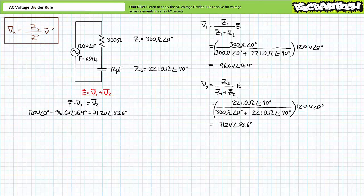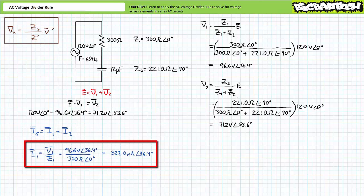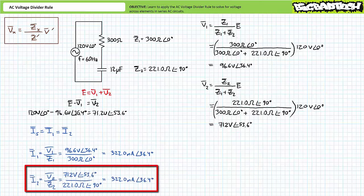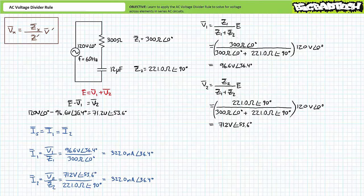Additionally, one can use Ohm's law to verify the results obtained using the AC voltage divider rule. Because these two elements are in series, they should experience the same current: IS equals I1 equals I2. Ohm's law solving for current shows impedance Z1 experiences 322 milliamps at an angle of 36.4 degrees. Similarly, Z2 also experiences 322 milliamps at an angle of 36.4 degrees — confirming that current through series elements is in fact equal.